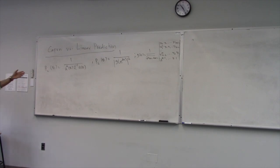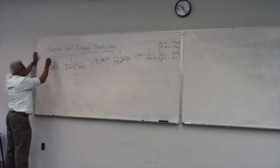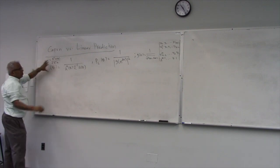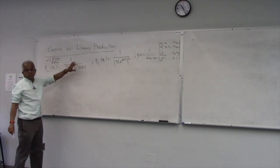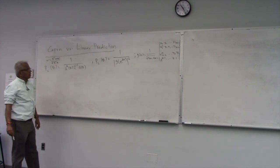So let's look at this comparison between two high resolution methods, Capone versus linear prediction. So if you recall, here the weight vector was R inverse A theta divided by A transpose R inverse A, and the corresponding output spectrum, the spatial spectrum, turned out to be one over A transpose R inverse A theta.